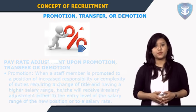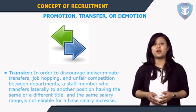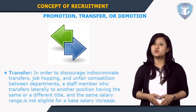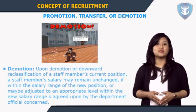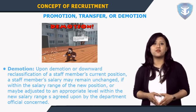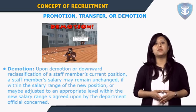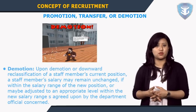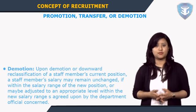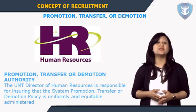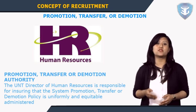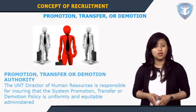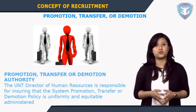To discourage job hopping and unfair competition between departments, a staff member who transfers laterally to another position with the same salary range is not eligible for a base salary increase. Upon demotion, a staff member's salary may remain unchanged if within the salary range of the new position, or may be adjusted to an appropriate level agreed upon by the department's Chair or Director and the UTN Director of Human Resources, subject to approval of the appropriate Vice-Chancellor or Chancellor. All promotions, transfers or demotions must have prior approval of the UNT Director of Human Resources before any commitment is made.